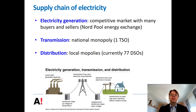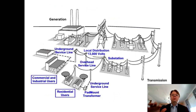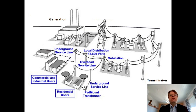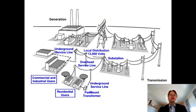Then we have a large number of local monopolies in the distribution. When we talk about the distribution firms, we don't take into account any generation or high voltage transmission, but we really focus on the low voltage distribution systems that are local monopolies in each area. The types of capital inputs that these companies have include underground cables, overhead lines, substations, and so on, as illustrated in these diagrams.